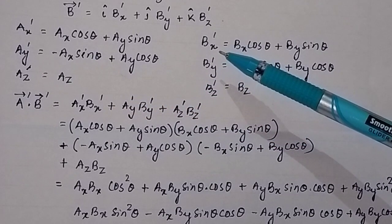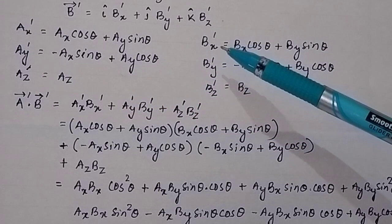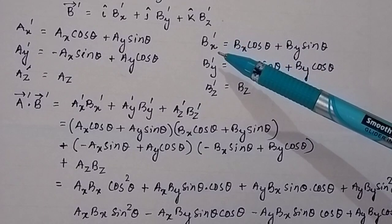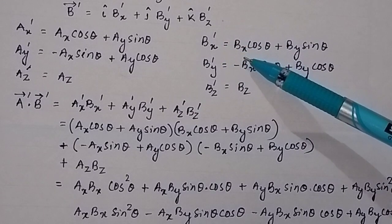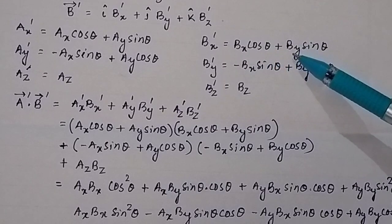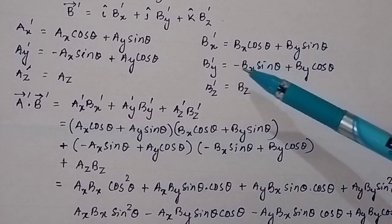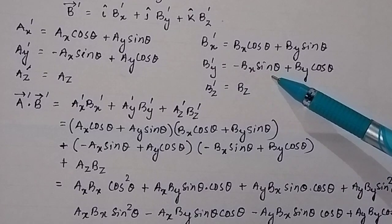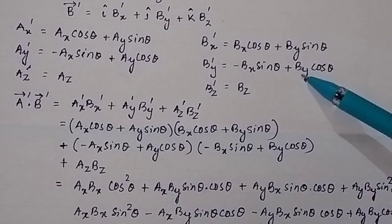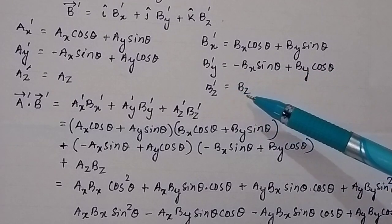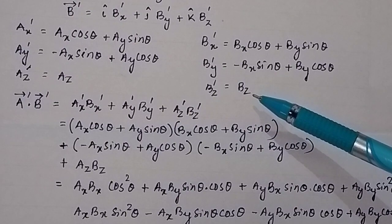Since the vector is rotating about the Z-axis, AZ-prime will be equal to AZ. Similarly, for vector B: BX-prime will be equal to BX cos theta plus BY sin theta, BY-prime will be equal to minus BX sin theta plus BY cos theta, and BZ-prime will be equal to BZ.